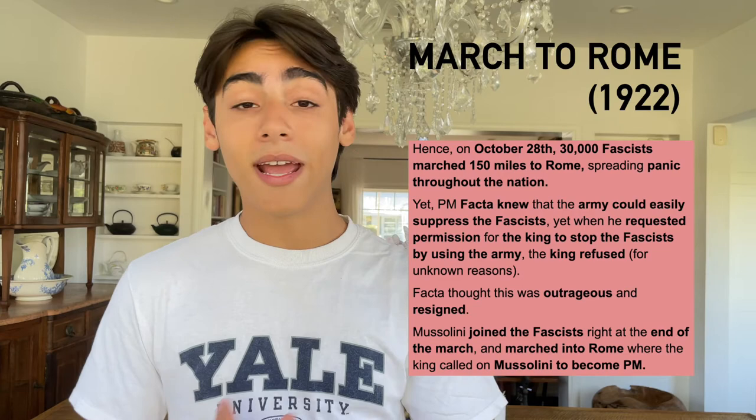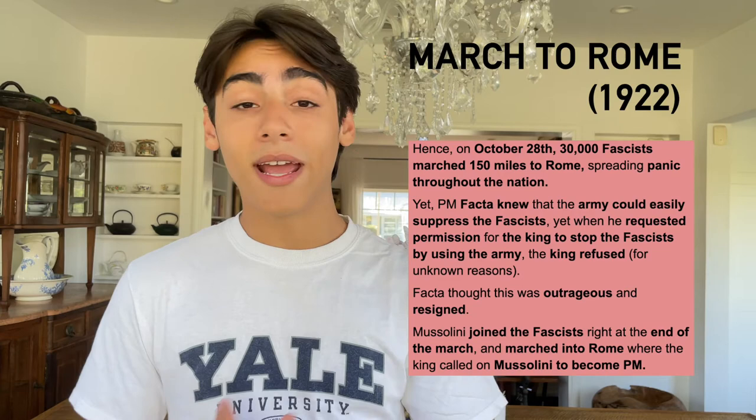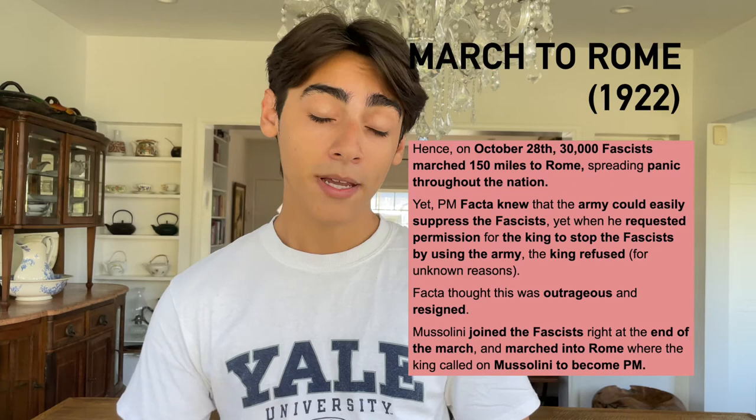In a rather poetic and epic way, Mussolini joined the fascist march right as they were entering Rome, and marched into Rome where the king would call upon him to become the new prime minister of Italy. Mussolini had effectively risen to the premiership of Italy, the highest possible government position just below the Italian king.